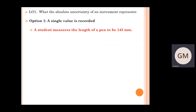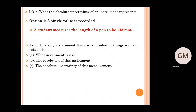Let's go through one example, looking at the more simplistic situation first, whereby a student has recorded a single value. In this case, a student measures the length of a pen to be 143 millimetres. From this single measurement, a number of things can be established: A, we should have some understanding of the type of instrument being used; B, we should understand what the resolution of the instrument represents; and C, we'll determine the absolute uncertainty of that measurement.